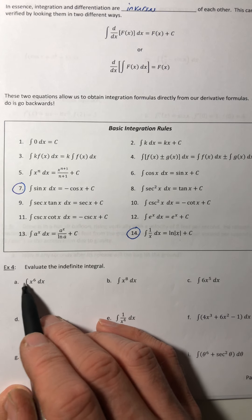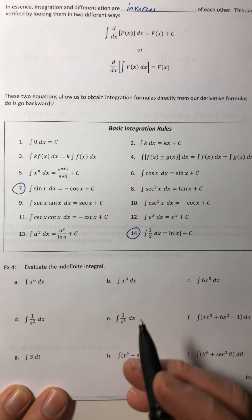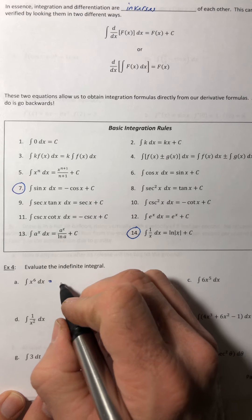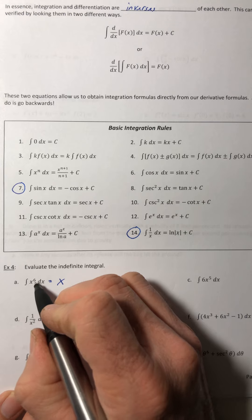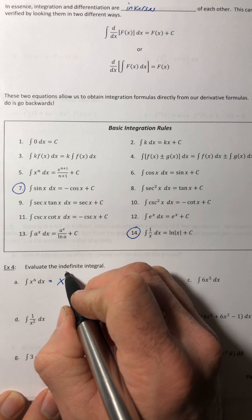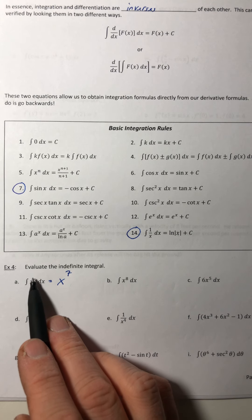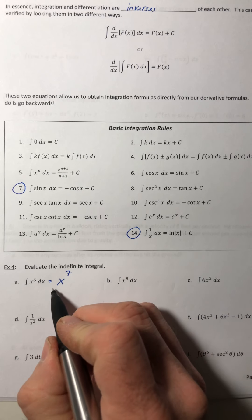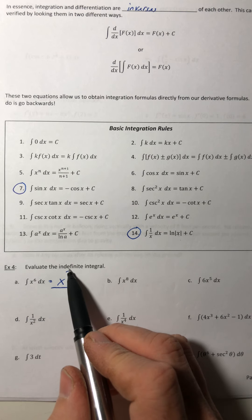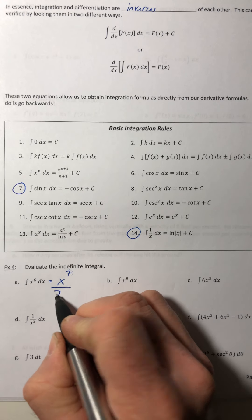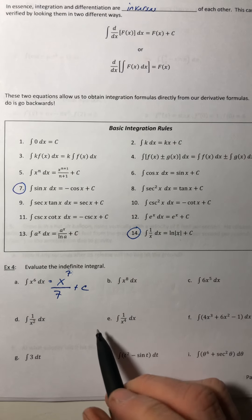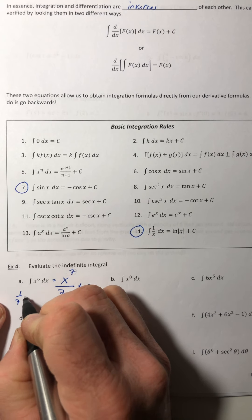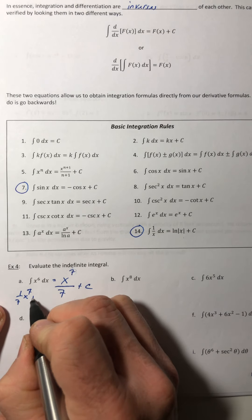When you use the power rule, it says pull the power down and multiply it to the front, and you're going to decrease the power by one. So we have to reverse that. If you reverse the power rule, instead of decreasing by one, you're going to increase by one. So the exponent is going to go from six to seven. And with the derivative, when you pulled it down it gets multiplied. Well, what's the reverse of multiplication? Division. So you're going to divide by whatever this new exponent is and then tack on your plus C. So x to the seventh over seven plus C, or if you wanted, you can also write it as one-seventh x to the seventh plus C. Either one is totally fine.